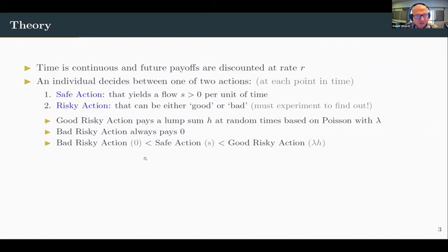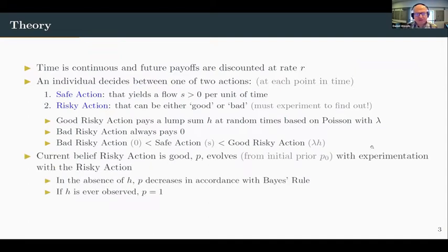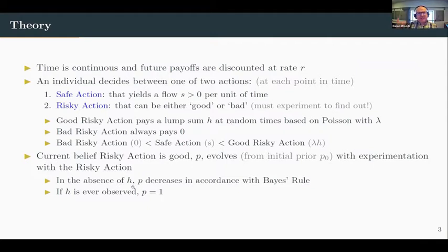The safe action is preferred to the bad risky action, but the good risky action is preferred to the safe action. So the agent has some incentive to experiment to find out if the risky action is actually good. The current belief that the risky action is good evolves from the initial prior as you experiment. If you're pulling on that risky action lever and not observing any lump sums H, your belief that the true state is good decreases via Bayes' rule. If you ever see one of those lump sums H, you know the true state must be good because the bad state always pays out zero.